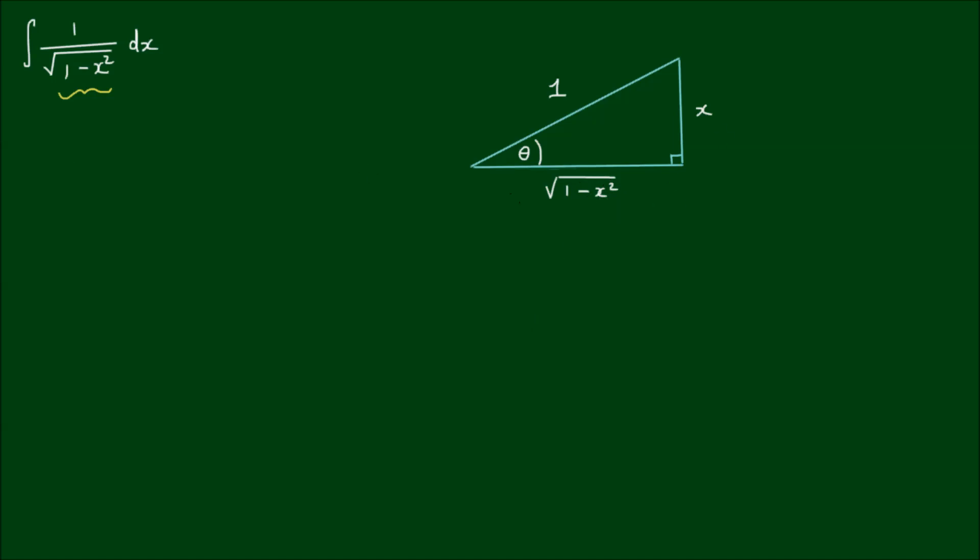So from this triangle here, x then is equal to the sine of theta. So x being the vertical side of the triangle with hypotenuse 1 is equal to the sine of theta.